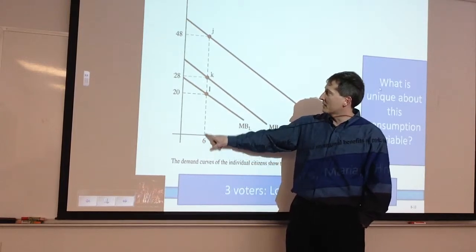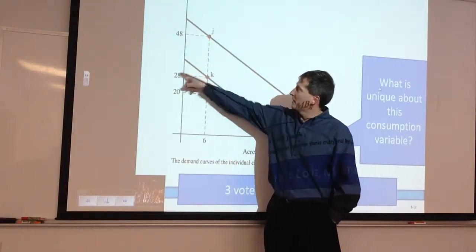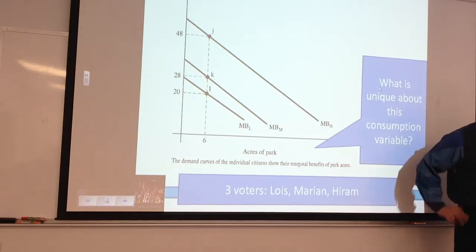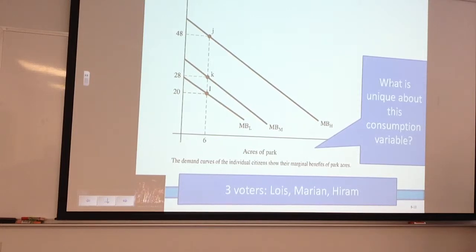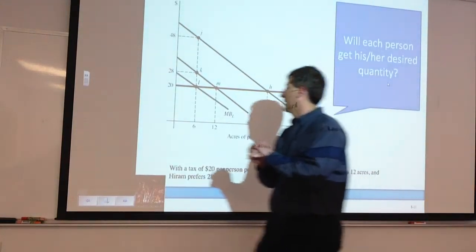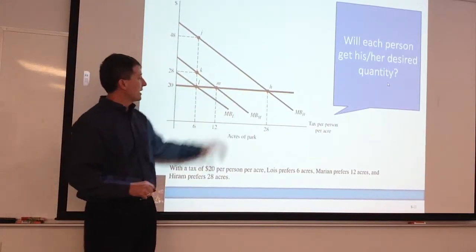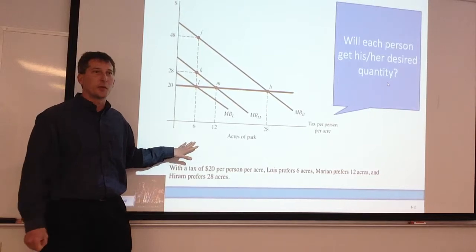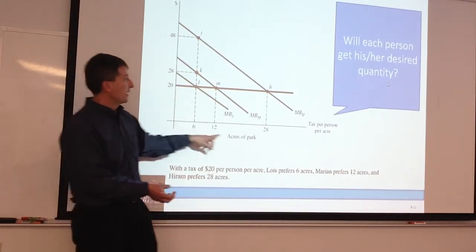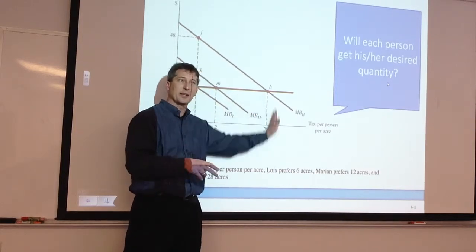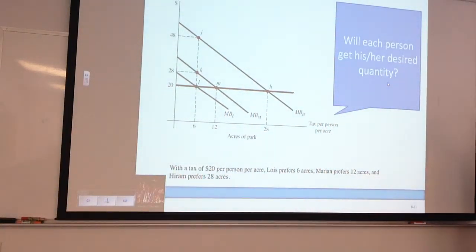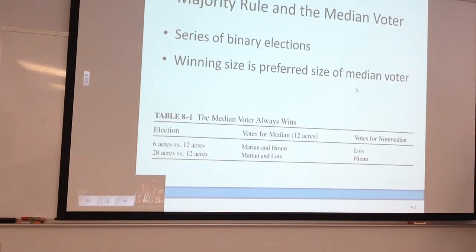With six acres, here's our classic public good problem. Lois gets $20 worth of benefit, Marion gets $28, and Hiram gets $48 worth of benefit. With a tax of $20 per person, does each person get his or her desired quantity? No — if we could charge $20 per use in a market system, Hiram would buy 28 acres. But that's not how it works since we've got a non-rival, non-excludable good. That shows their preferences at $20.